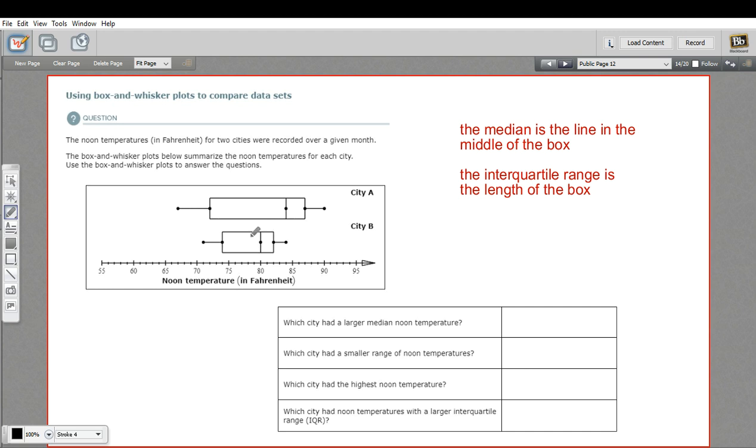Box and whisker plots are also broken up into four chunks. So you've got this tail and this tail, and then you've got two sections of the box. These four chunks are the quartiles. So you break the data set down into groups of four - a fourth of the data points here, a fourth here, a fourth here, and a fourth here.